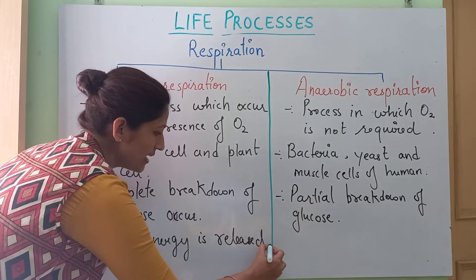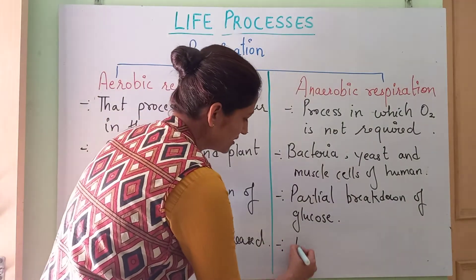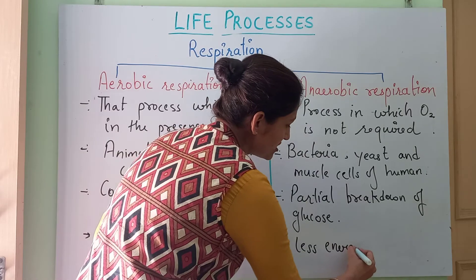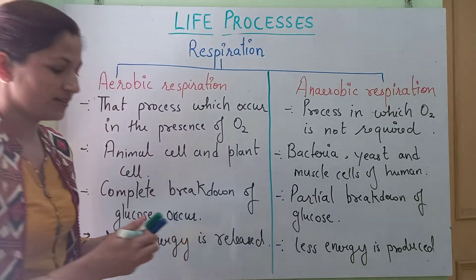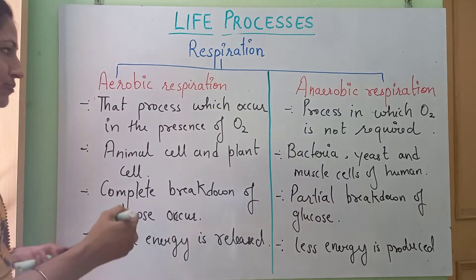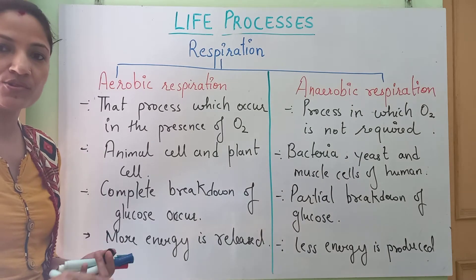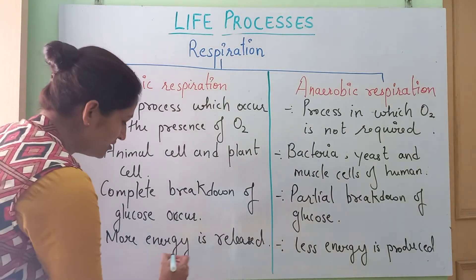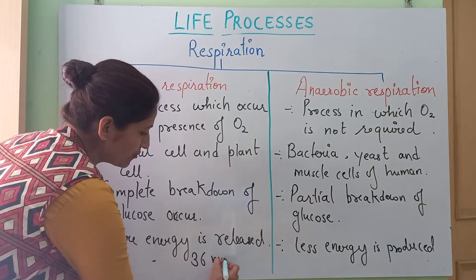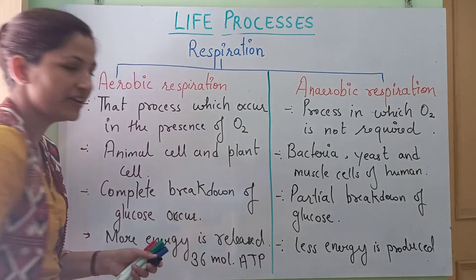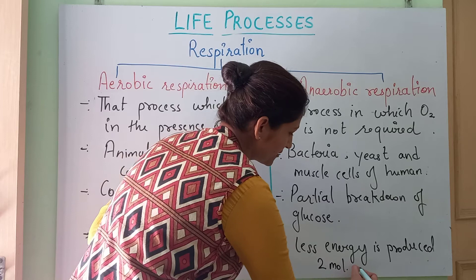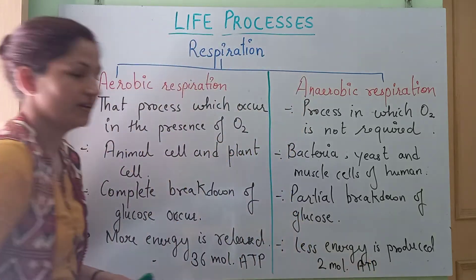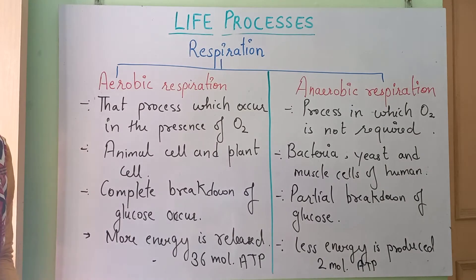In aerobic respiration, more energy is obtained as compared to anaerobic respiration where less energy is produced. In terms of ATP molecules, after the breakdown of one glucose molecule in aerobic respiration, 36 molecules of ATP are obtained. In the case of anaerobic respiration, only 2 molecules of ATP are obtained. You can compare how much less energy is obtained in anaerobic respiration.